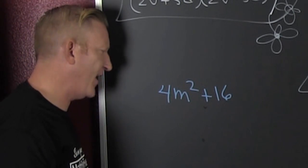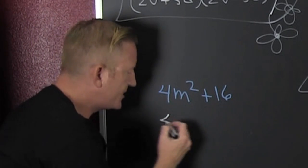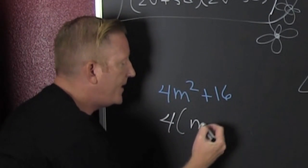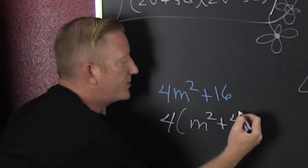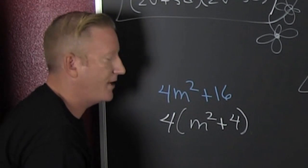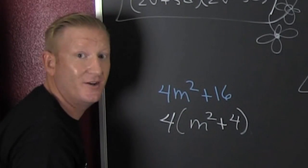First rule of factoring: never talk about factoring. And then after that, pull out a common term. They both have four, and then I have m squared plus 4. Not 4 squared, just 4. But wait, there's no more, because there is no sum of squares.